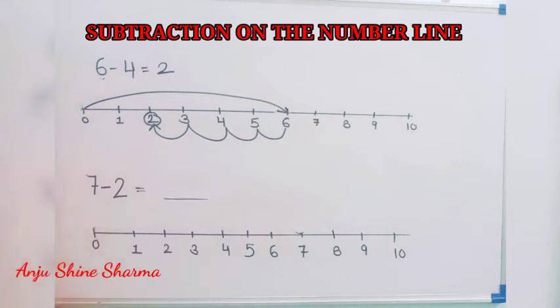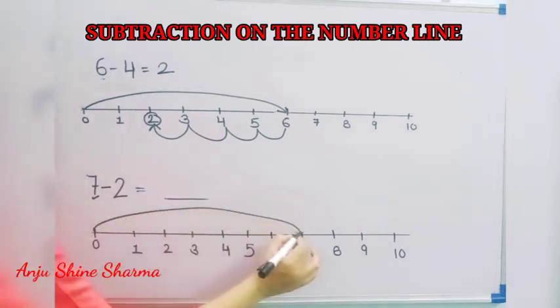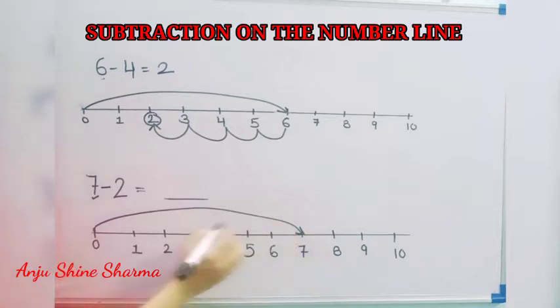Question number 2 is 7 minus 2. Here first number is 7. So we start from 0 and reach at 7 like this. And the second number is 2.